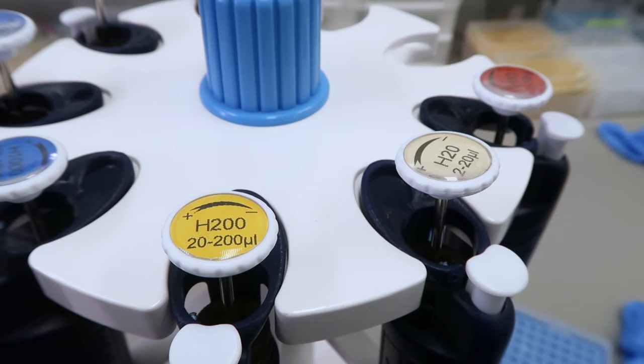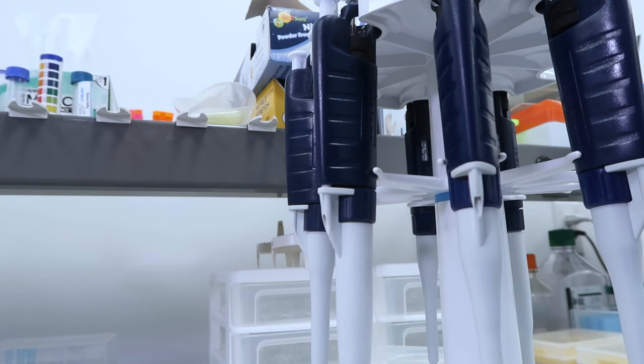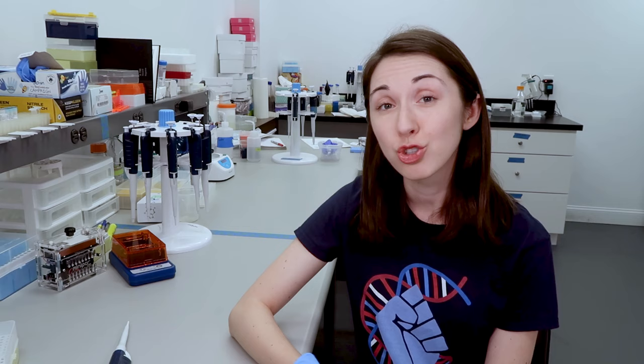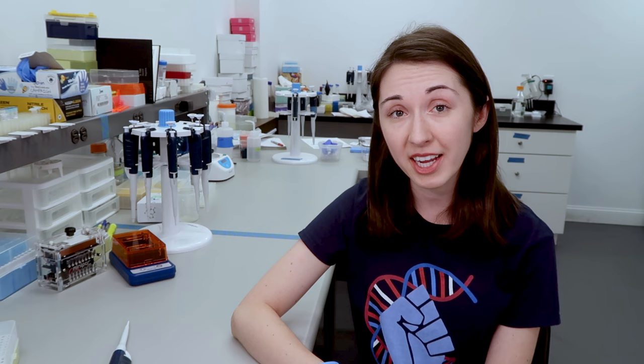You should first make sure that you select the appropriate pipet for the volume you need to measure. For example, the 20 microliter pipet will accurately measure volumes between 2 and 20 microliters. Trying to use a pipet at a volume outside of its range will result in inaccurate measurements and may damage the pipet.